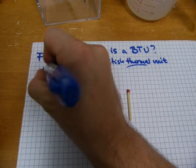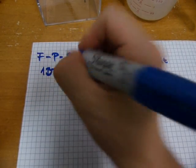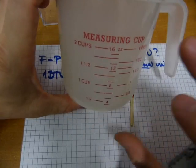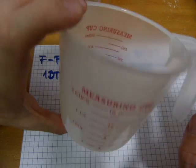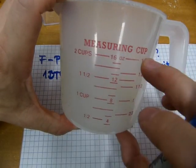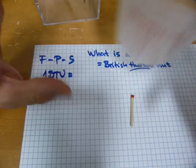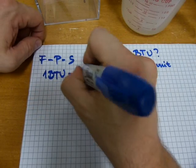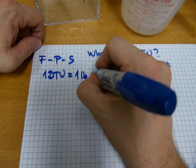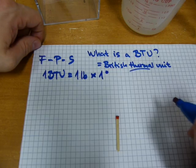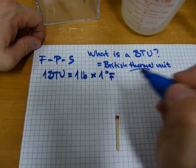One BTU is an amount of heat that heats up one pound of water. When you put into this measuring cup two cups of water, there is going to be approximately one pound of water in this measuring cup. You heat up one pound of water by exactly one degree, and that one degree has to be on the Fahrenheit scale.